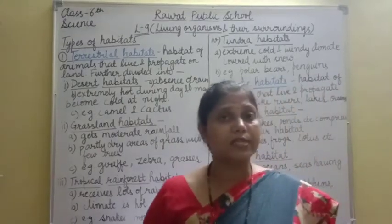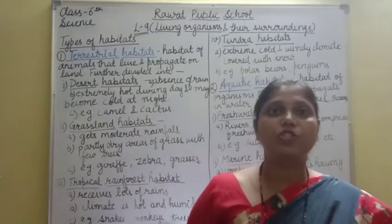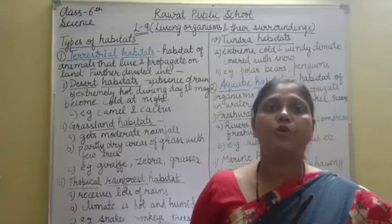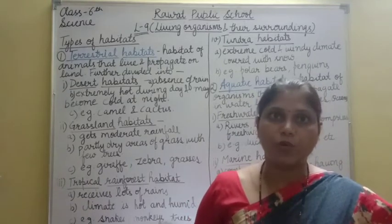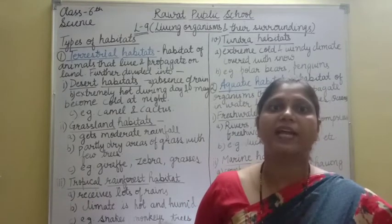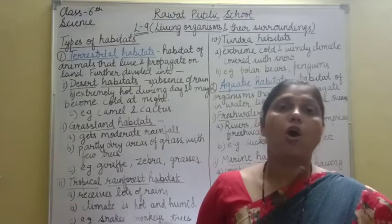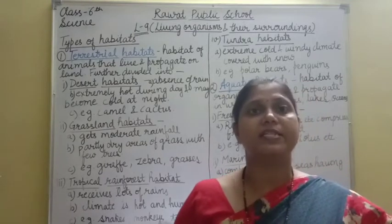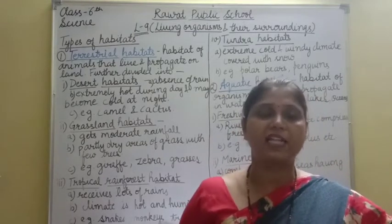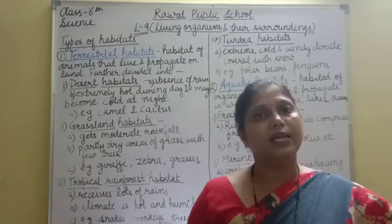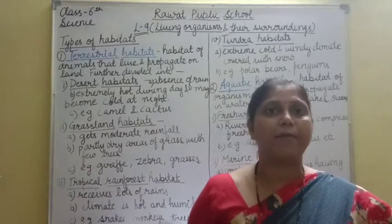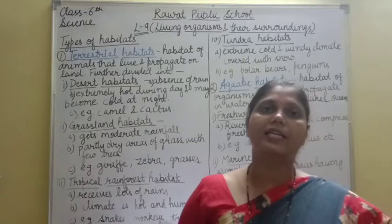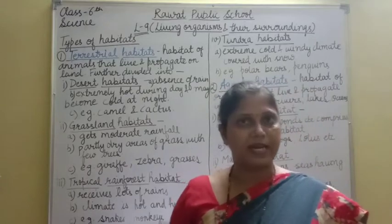Land जो है वह बहुत wide variety की है, क्योंकि land में mountains भी present हैं, forest भी present हैं, बहुत cold regions भी present हैं, hilly areas भी present हैं. तो अलग-अलग type के habitats हैं — terrestrial habitat के अंदर अलग-अलग type के habitats हैं.